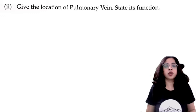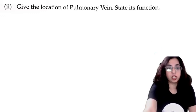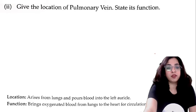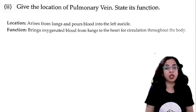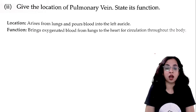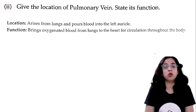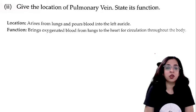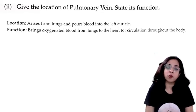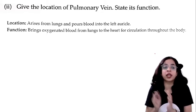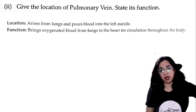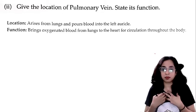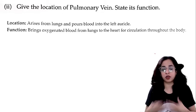Give the location of the pulmonary vein and state its function. Location: it arises from the lungs and pours blood into the left auricle. Function: it brings oxygenated blood from the lungs to the heart for circulation throughout the body.